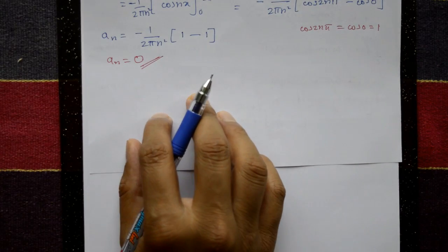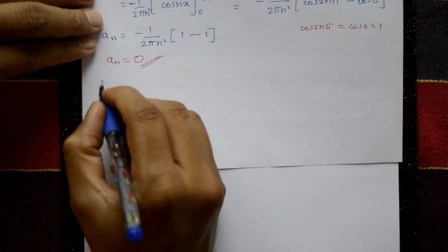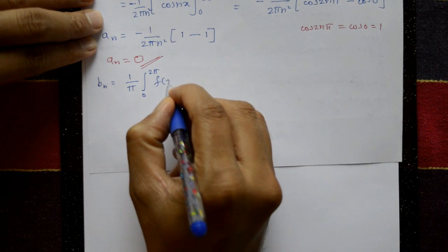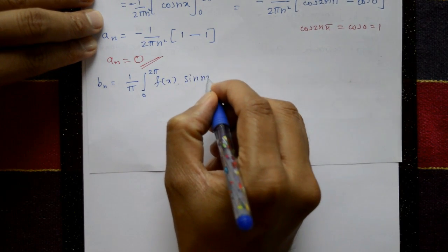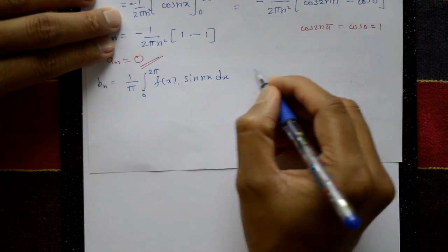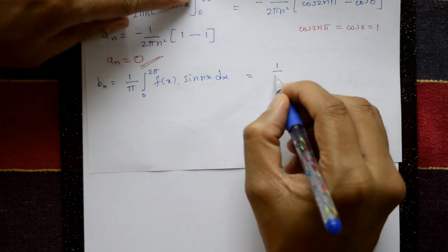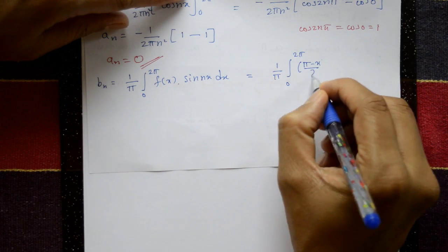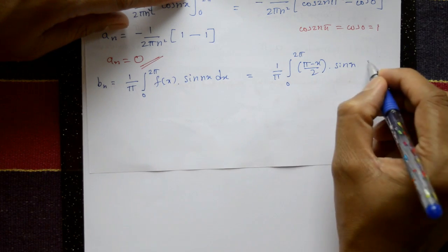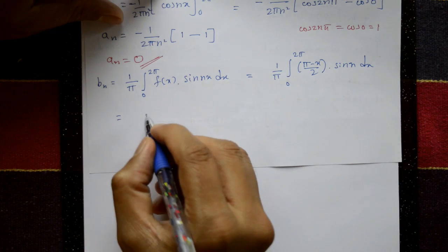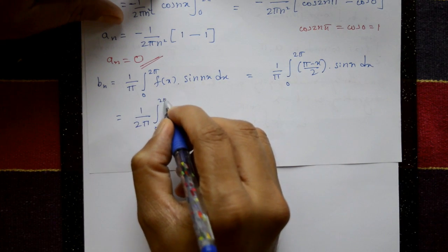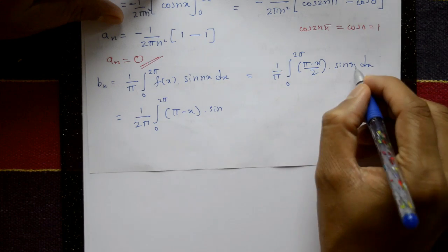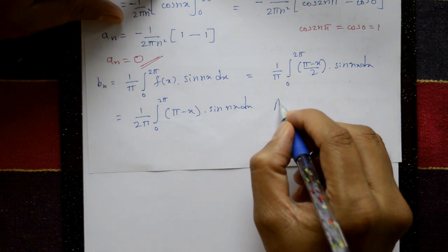Now find bₙ. The formula is bₙ = (1/π) × integration from 0 to 2π of f(x)sin(nx) dx. Substituting f(x) = (π - x)/2: bₙ = (1/2π) × integration from 0 to 2π of (π - x)sin(nx) dx. Applying Bernoulli's rule again.